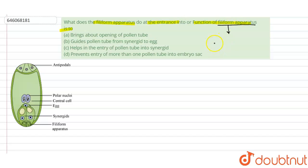They are basically the prolongation of the synergids. So they are the prolongation of synergids which is present outside a part of the embryo sac. As you can see, they are being extended to outside the embryo sac.